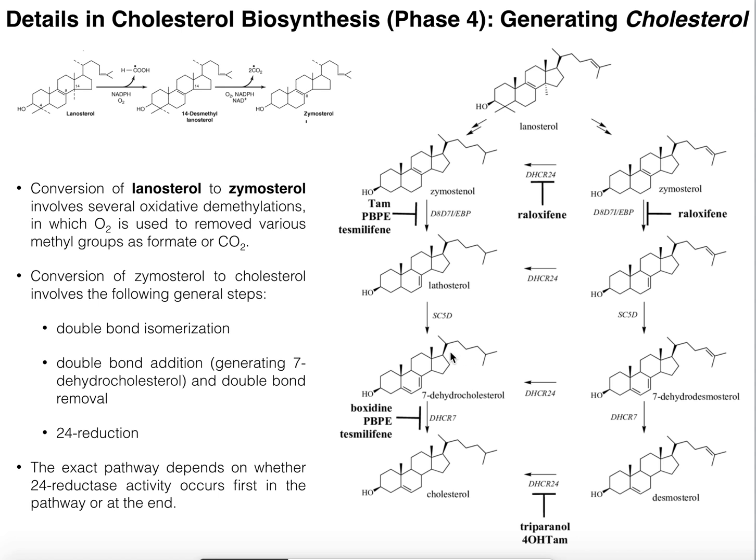This gives us two important products: 7-dehydrocholesterol, used in vitamin D (calcitriol) synthesis, and cholesterol, which has a wide variety of functions. Cholesterol can be used to make bile acids, and steroids such as testosterone, estradiol, cortisol, and aldosterone. It also plays important roles in stabilizing plasma membranes over a wide range of temperatures.